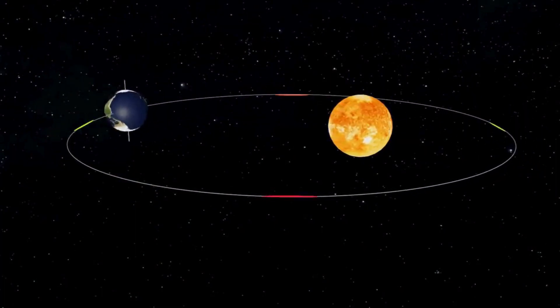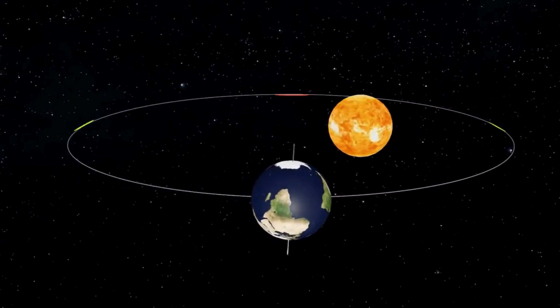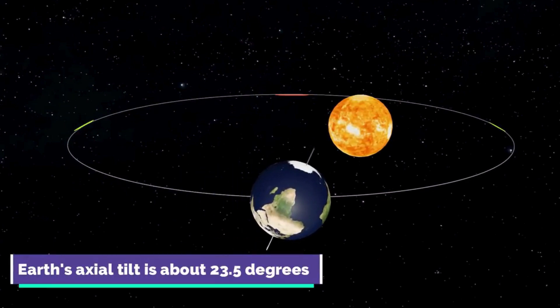The reason we have seasons is all thanks to the Earth's tilt. That's right, our planet is tilted on its axis by 23.5 degrees.